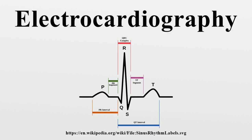To the trained clinician, an ECG conveys a large amount of information about the structure of the heart and the function of its electrical conduction system. Among other things, an ECG can be used to measure the rate and rhythm of heartbeats and the size and position of the heart's chambers.